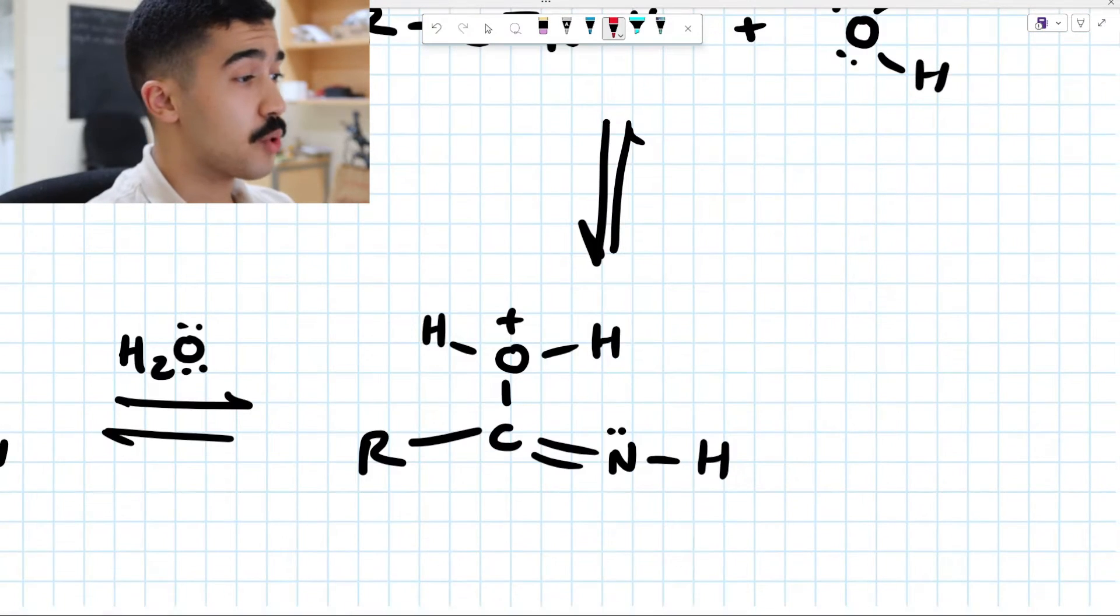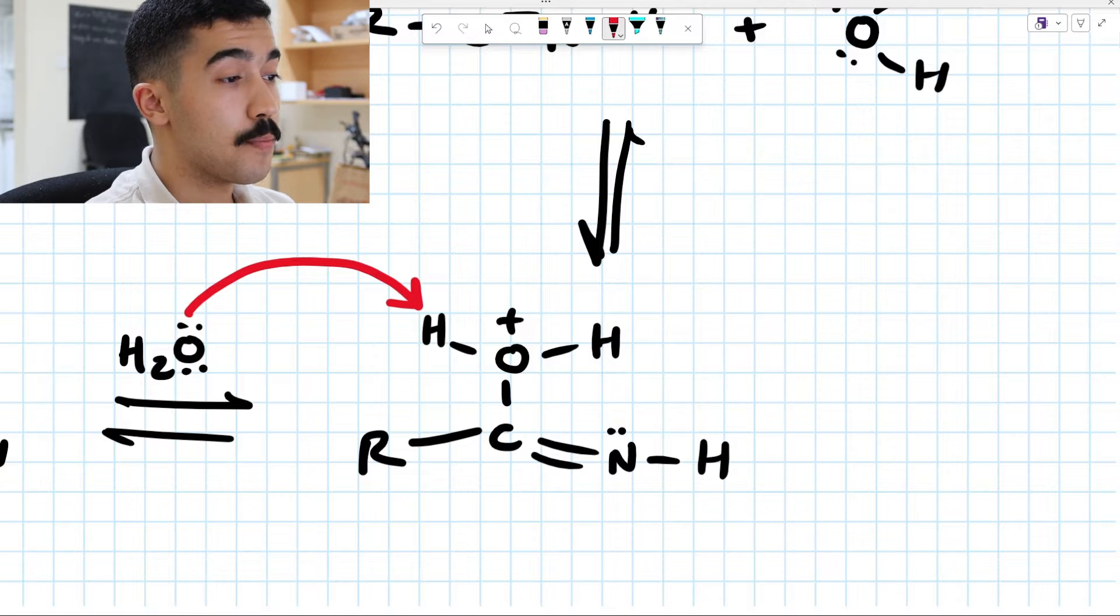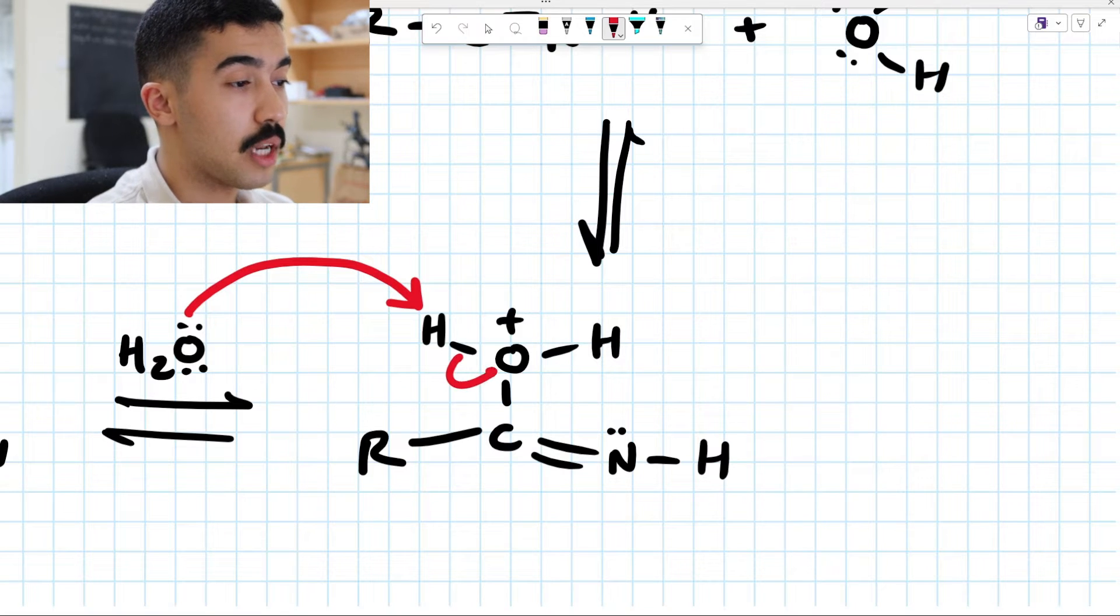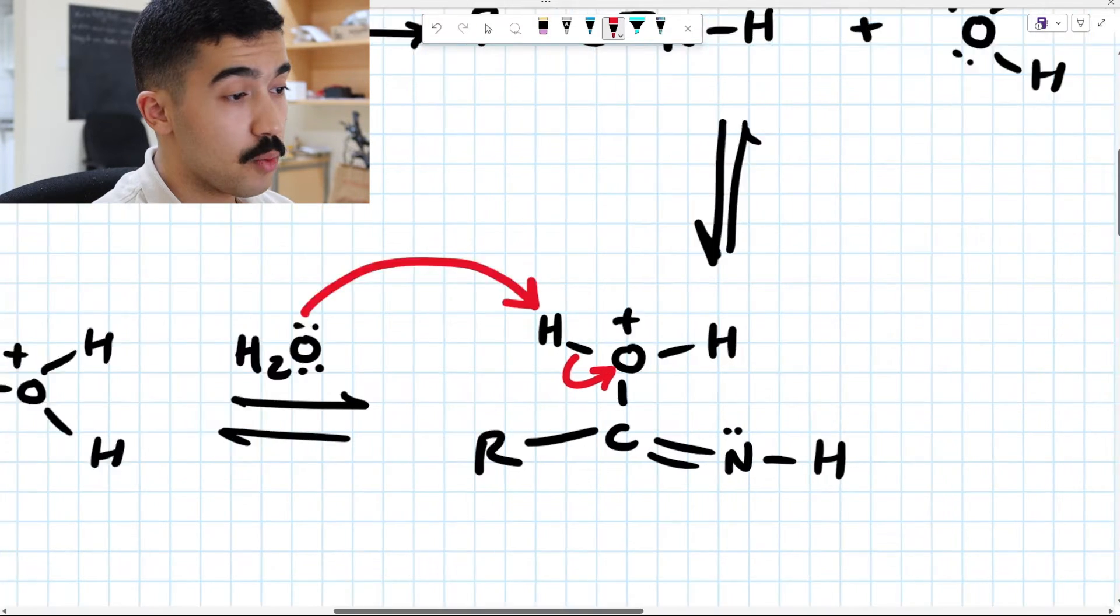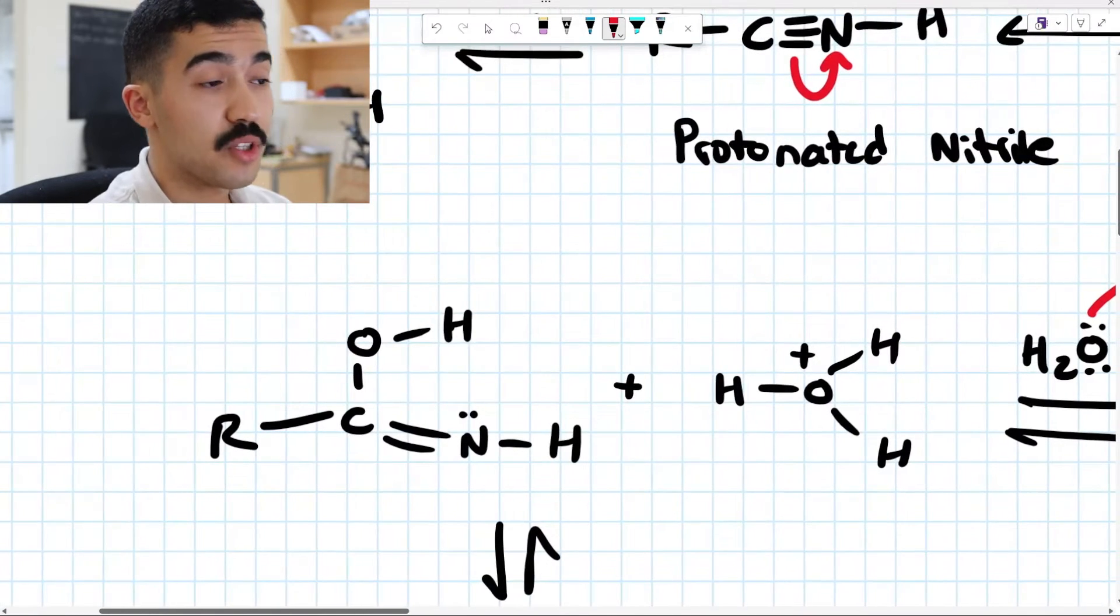At this point, what's going to happen is we're going to have another water molecule come in. And it's going to remove one of these hydrogens on our protonated hydroxyl group. So the OH2 group, that OH2 plus group that just formed, we're going to remove one of those hydrogens. H2O is going to come in and remove one of these hydrogens. These electrons are going to collapse towards oxygen. When we do that, we're going to form H3O plus. And now we just have a hydroxyl group because we removed one of those hydrogens. Perfect.